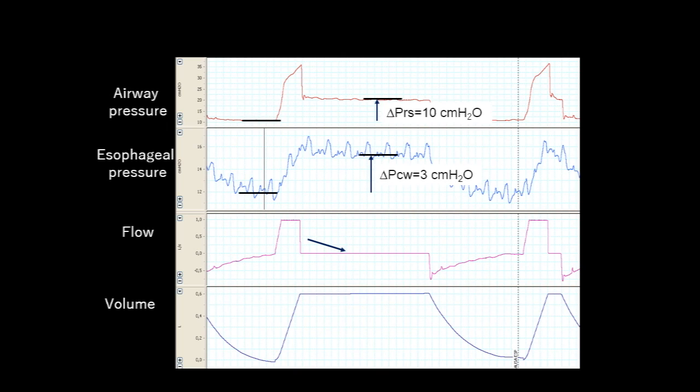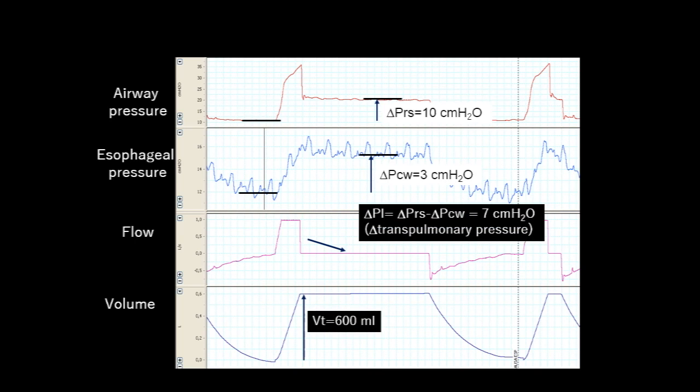The difference between the total pressure generated by the respiratory system and the pressure generated by the chest wall is the pressure generated by the lung, 7 cmH₂O in this case, which is the difference in transpulmonary pressure induced by tidal inflation.